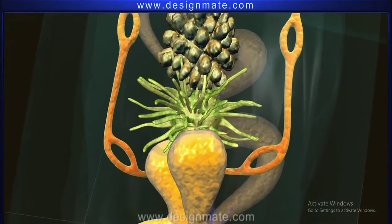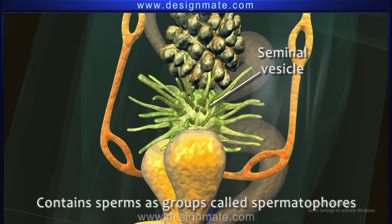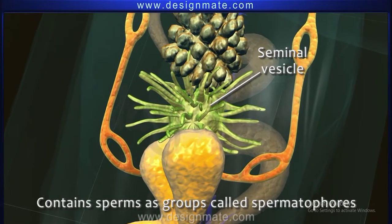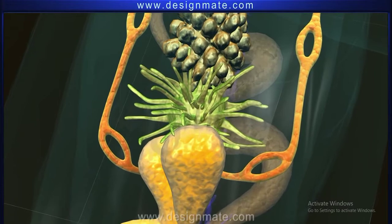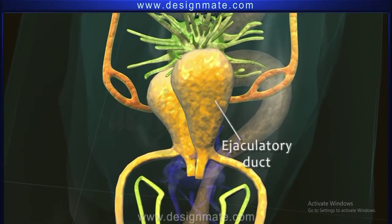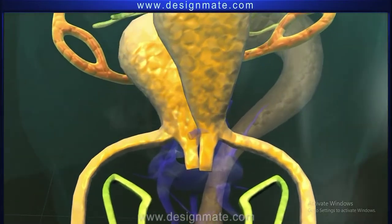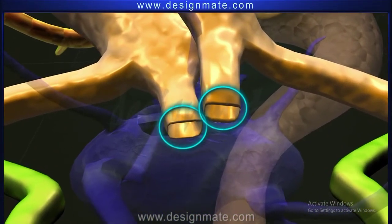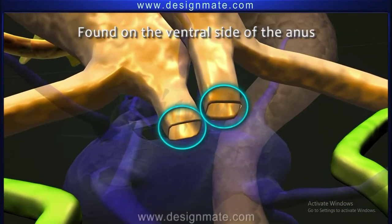The vas deferens leads to the seminal vesicle, which contains sperms glued together as groups called spermatophores. The seminal vesicles open into the ejaculatory duct, which leads to the male genital opening, the gonopore, found on the ventral side of the anus.